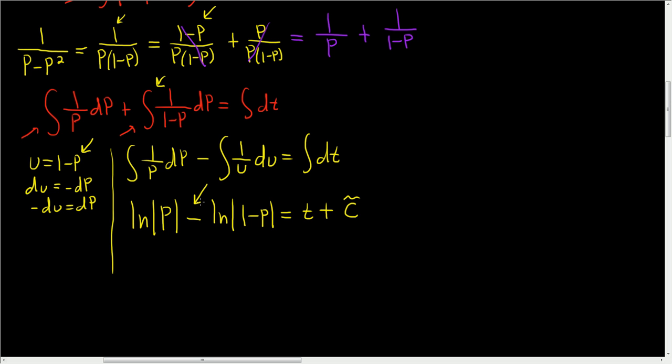Here we can use the quotient rule for logarithms. So this is the natural log of p over 1 minus p. And this is equal to t plus c tilde. To get rid of the natural log, we can exponentiate both sides. So remember, this is an exponent. So all of this is in the exponent.